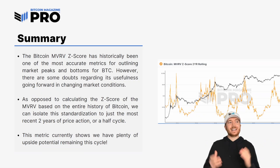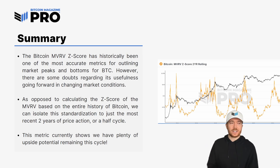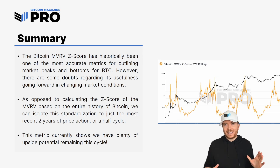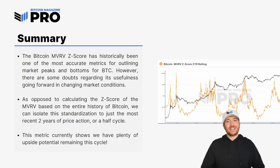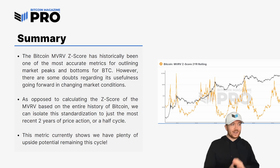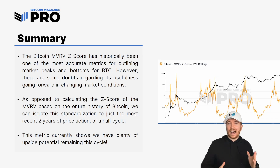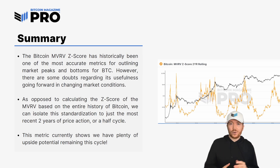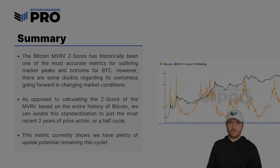To summarize: the Bitcoin MVRV Z score has historically been one of the most accurate metrics for outlining market peaks and bottoms for BTC. However, there are some doubts regarding its usefulness going forward in ever-changing market conditions — with institutions coming in and sovereign state capital pouring in — considerably different from the supply and demand economics of a few cycles ago. The market has changed and we need to update our on-chain analytics. By isolating the Z score standardization to just the most recent two years of Bitcoin price action — about a half-cycle basis — this new metric currently shows we have plenty of upside potential remaining, currently at a value of about one, while the upper region doesn't really start topping out until values of around four.